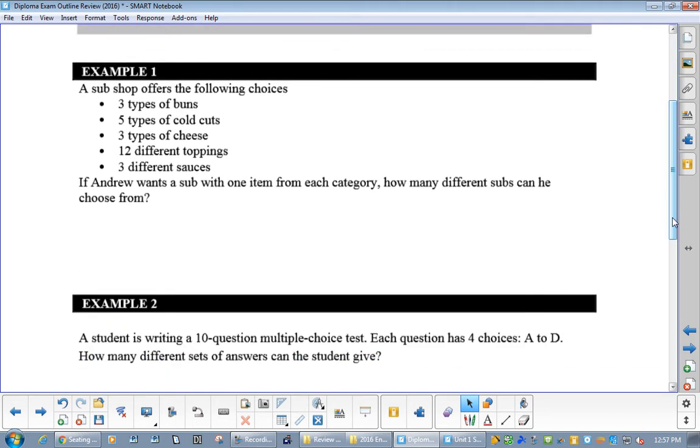Now, it doesn't get much easier than example one. You've got how many different subs could you make if there's three different buns, five different cold cuts, three types of cheese, twelve different toppings, and three sauces.